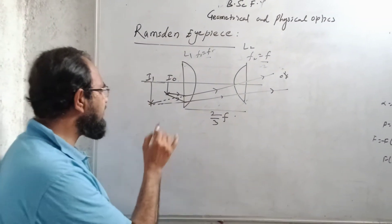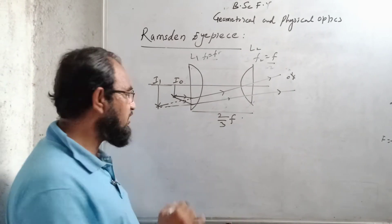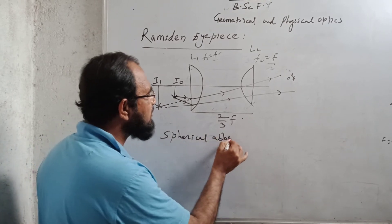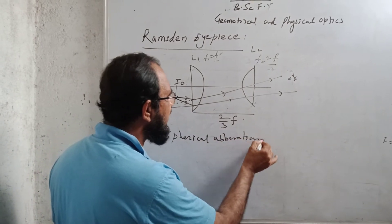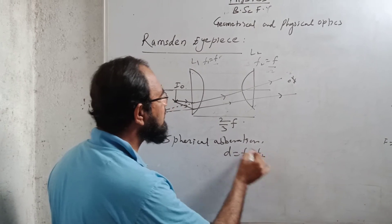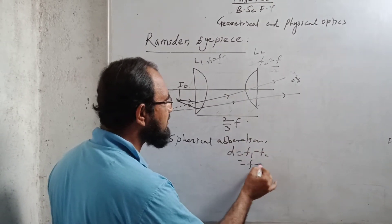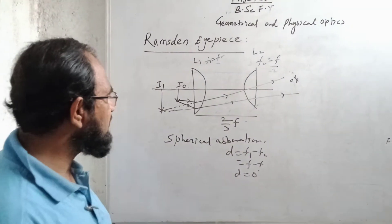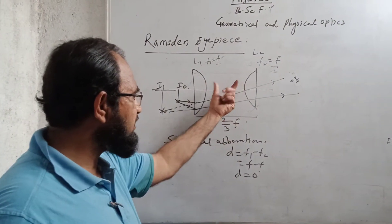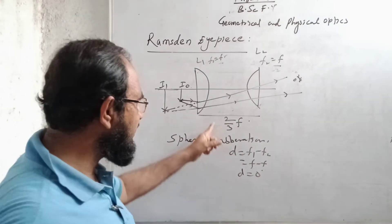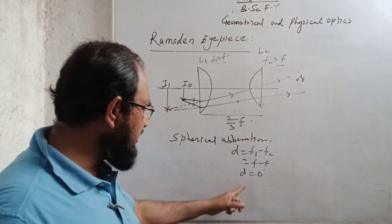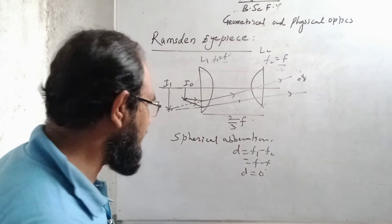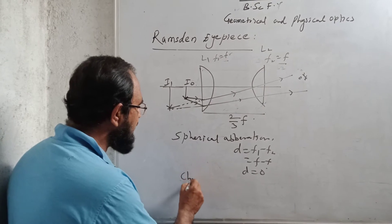Now, whether this eyepiece is free from spherical aberration or not — the condition for removing spherical aberration is that D should be equal to F1 minus F2. Since both lenses have the same focal length, the value of D should be 0, meaning the two lenses should be kept in contact. But we are keeping them at a distance of 2/3 F, so it means this eyepiece is not free from spherical aberration.